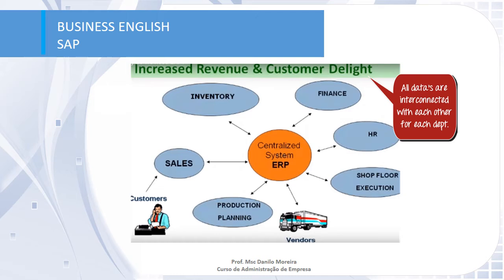SAP centralizes all data interacting across the organization — inventory, finance, HR, shop floor, production planning, sales, customers, and vendors. All this data is centralized by the ERP, which in our case is SAP. To better manage all this data and information, we need a system, a software to better manage it.